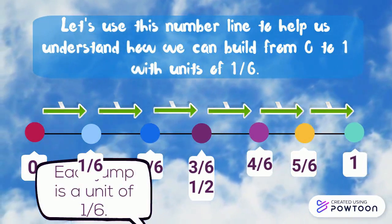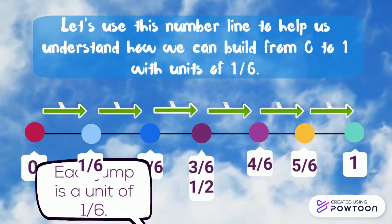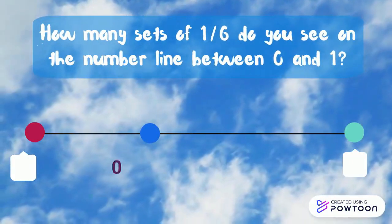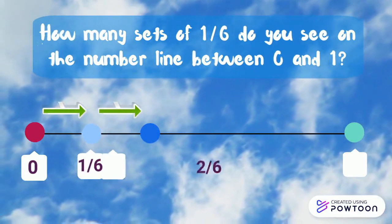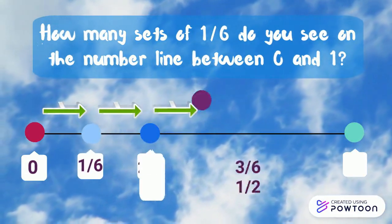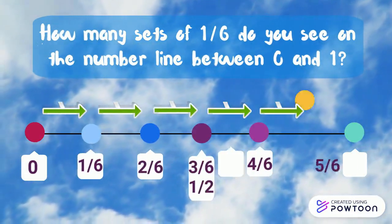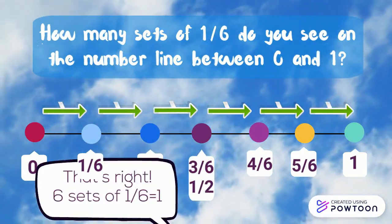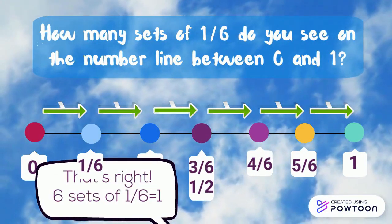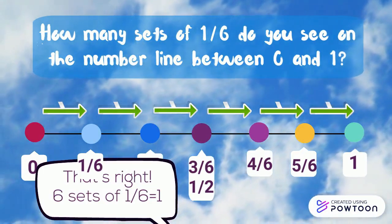Each jump is a unit of one-sixth. How many sets of one-sixth do you see on the number line between zero and one? That's right! Six-sixths equals one.